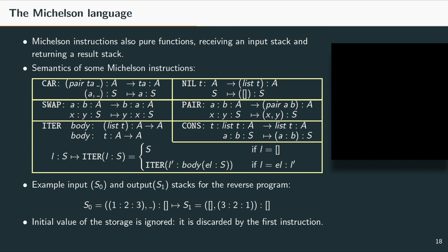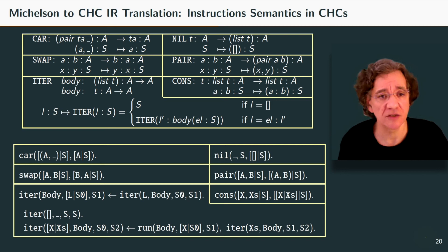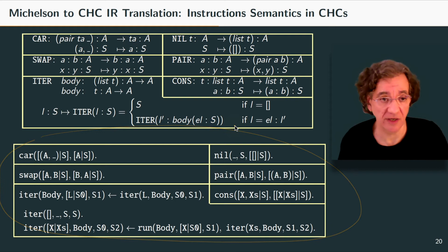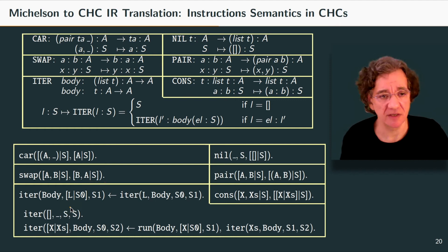The Michelson instructions can also be seen as pure functions receiving an input stack and returning a result stack. The table shows the semantics of Michelson instructions used in a list-reversal example. For instance, NIL inserts an empty list on top of the stack; SWAP exchanges the top two elements; and ITER traverses the elements of a list performing an operation. Control structures like IF or LOOP receive one or two blocks of code as arguments. As a concrete example, a call to a contract with a list of numbers 1 to 3 as parameter would produce the corresponding input and output stacks.